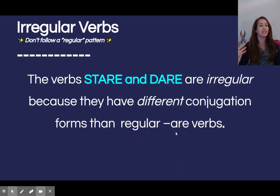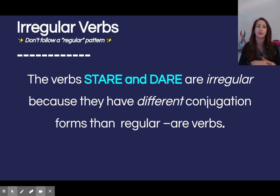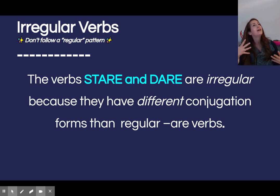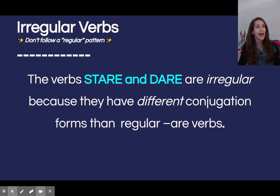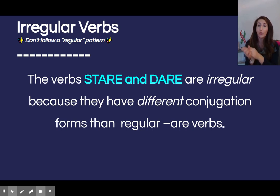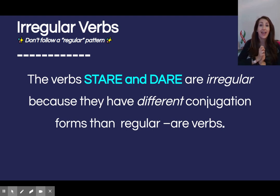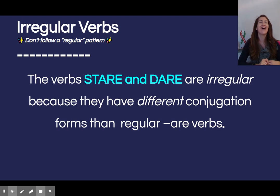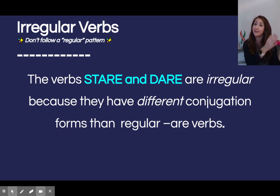The verbs stare and dare are irregular because they have different conjugation forms than those regular A-R-E verbs. Because mi piace cantare, I love to sing: A-R-E, A-R-E — io ends in O, tu ends in I, lui/lei ends in A, noi iamo, voi ate, loro ano, A-R-E.